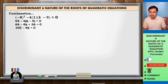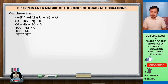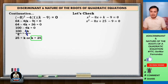Combine similar terms: 64 and 36 are similar terms, and 64 plus 36 is 100. So we have 100 minus 4k equals 0. Transpose negative 4k to the right side; the sign changes from negative to positive, giving us 100 equals 4k. Divide both sides by 4: 100 over 4 equals 4k over 4. Cancel out 4, and 100 over 4 is 25. So k equals 25.